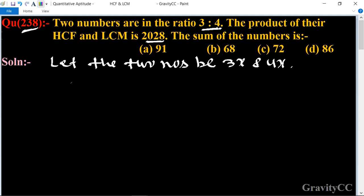And we know that the product of two numbers is equal to HCF times LCM. So product of two numbers means 3x times 4x